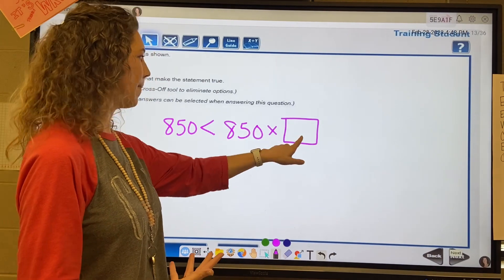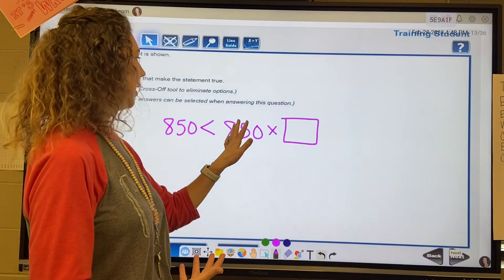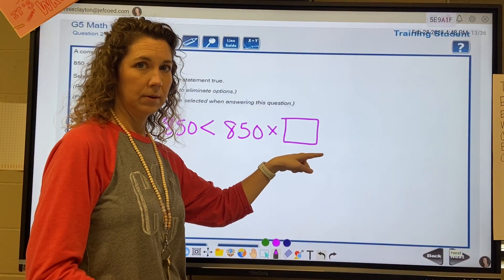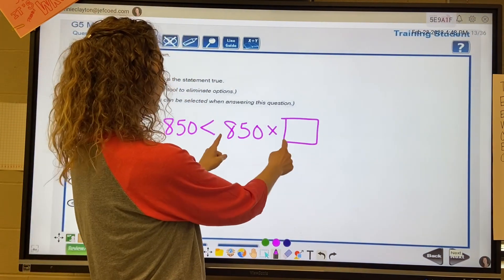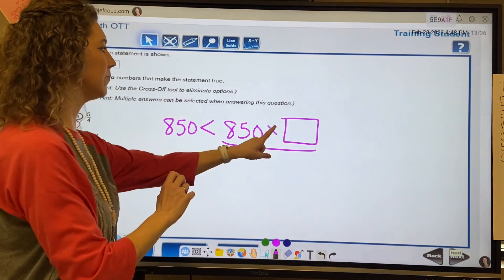If I multiply it by one, it's going to be equal. If I multiply it by something greater than one, even if it's 1.1 or 1.2, then that would be greater than the 850. So I'm looking for a number that is more than one, a value of more than one.